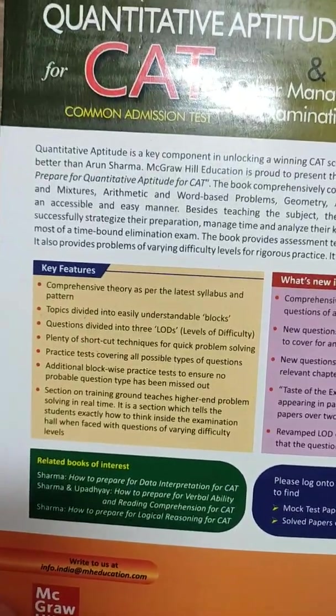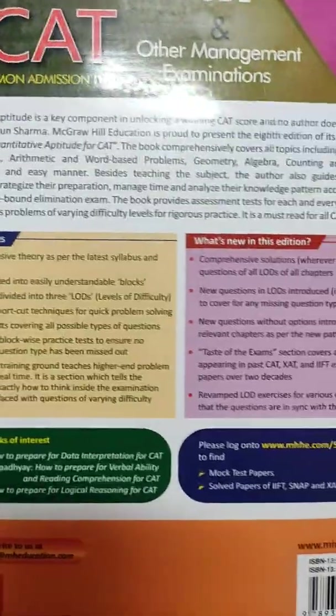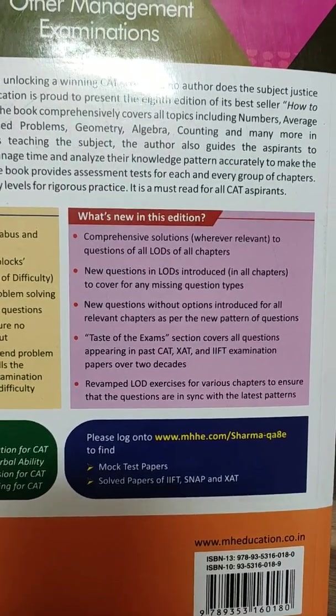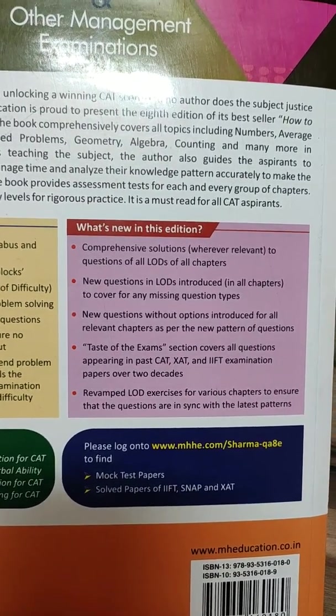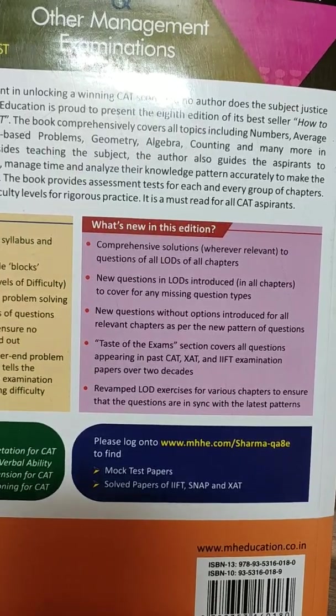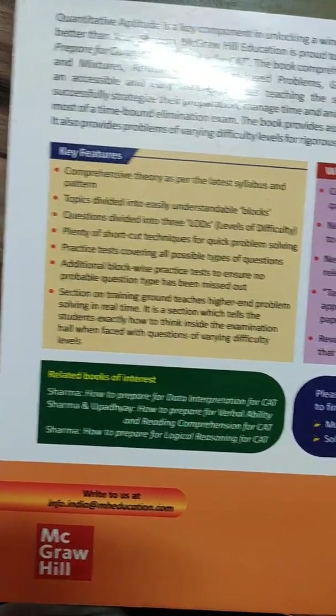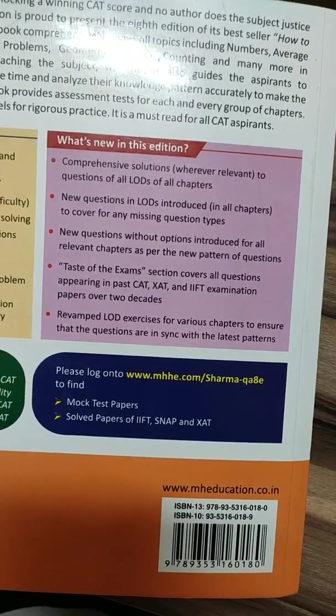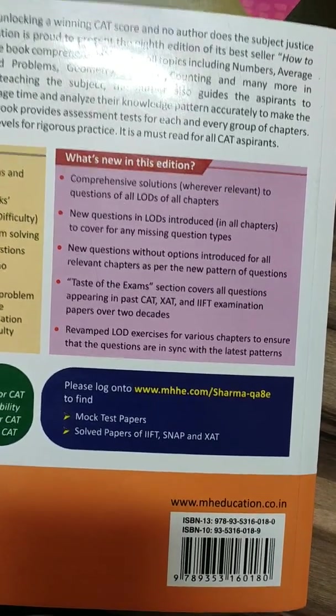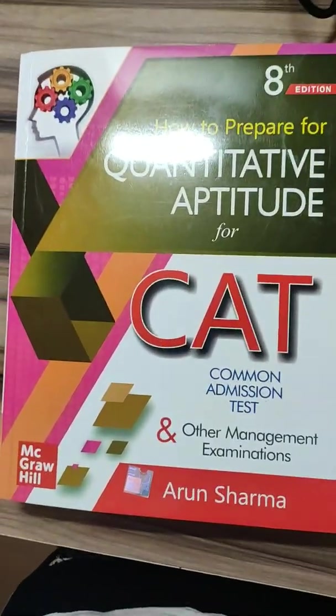So this is the back cover. Key features you can read: comprehensive theory as per related syllabus and pattern, topics divided into easily understandable blocks, questions divided into three LODs. What's new in this edition: comprehensive solutions wherever relevant to questions of all LODs of all chapters, new questions in LODs introduced to cover any missing question types. These are some of the other books. And here is given online learning—you can log into that and you can take the solved papers and some mock tests also. This is the MRP. So as a result, thank you for watching my video. I hope you will like, subscribe, and comment also. Thank you.